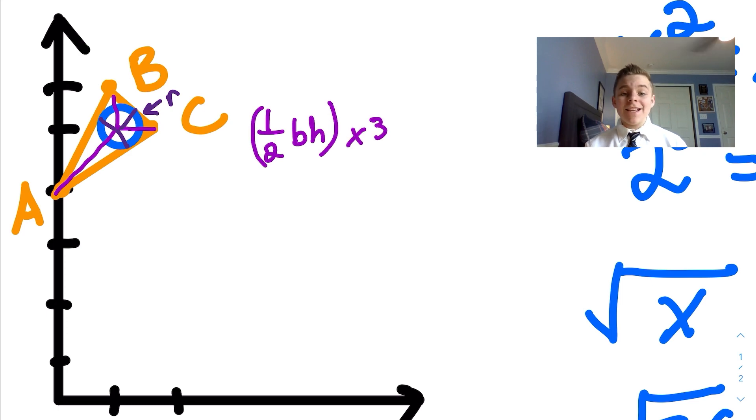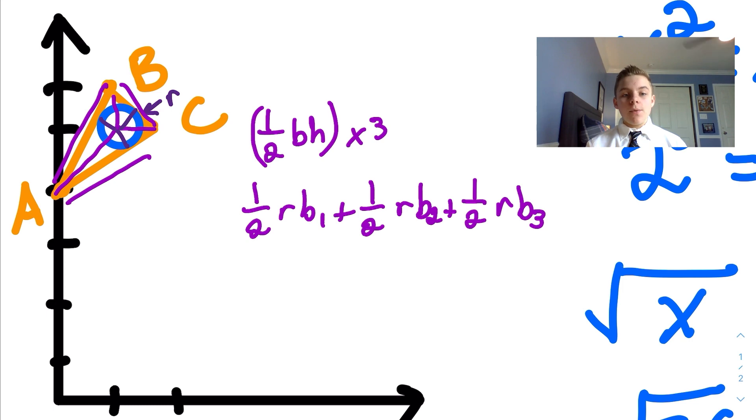Since the radius is the height, the entire equation would be area equals 1/2 radius times its base plus 1/2 radius times its base plus 1/2 radius times its base. If we simplify this equation, we get 1/2 radius times (base 1 plus base 2 plus base 3).